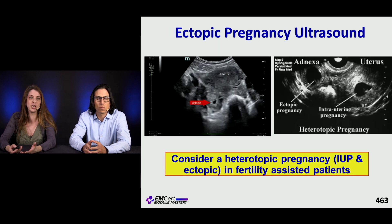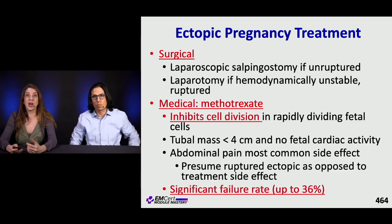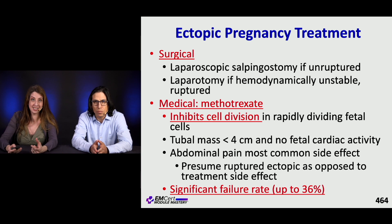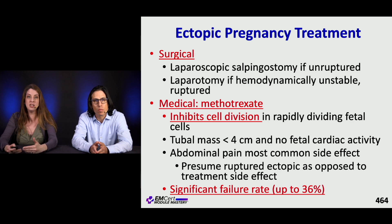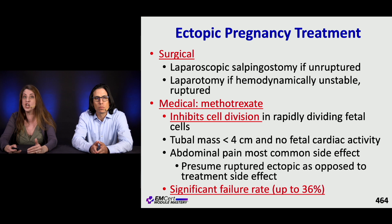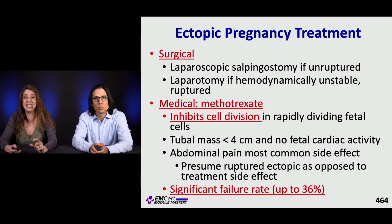This image shows a heterotopic pregnancy with a pregnancy inside the uterus as well as outside. Treatment options include surgical excision of the ectopic; unstable patients go to the OR. Some may need a salpingostomy. If early enough, medical treatment with methotrexate — which inhibits cell division — is an option. Criteria for methotrexate include a tubal mass less than four centimeters and no cardiac activity. Abdominal pain is the most common side effect, and about one-third of patients can fail methotrexate alone and may still need surgical intervention.